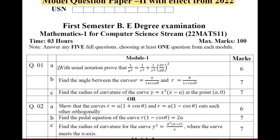In Module 1 of model question paper 2, question 1a requires deriving a pedal equation, compared to the previous paper which asked to prove tan φ = (1/r)·dθ/dr. Similarly, there is a question to find the angle between two curves and to find the radius of curvature. The choice question again asks to show that two given curves intersect orthogonally and to solve using the pedal equation and radius of curvature. You can prepare these from your textbook or notes.